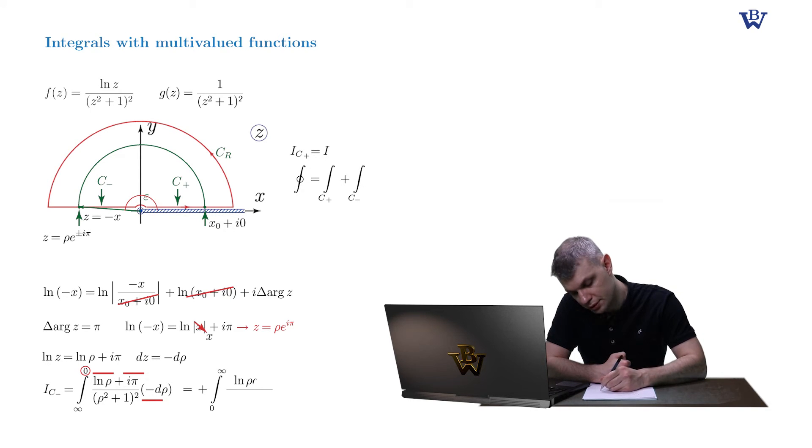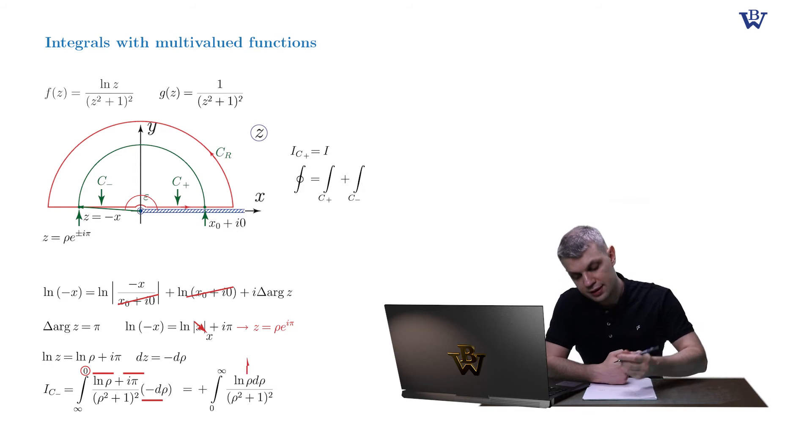So now we have the integral from zero to plus infinity, log rho d rho divided by the denominator, which is nothing but our initial integral, but now with plus sign, and plus i pi, and then the remainder term.